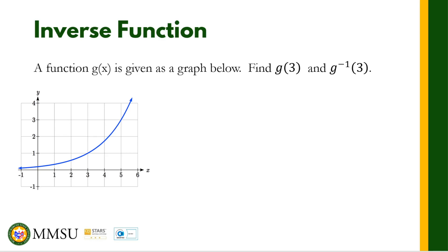When we are given a graph of g(x), let's find g(3). We look at where x equals 3 on the graph and find the corresponding output. The output is 1, therefore g(3) equals 1.